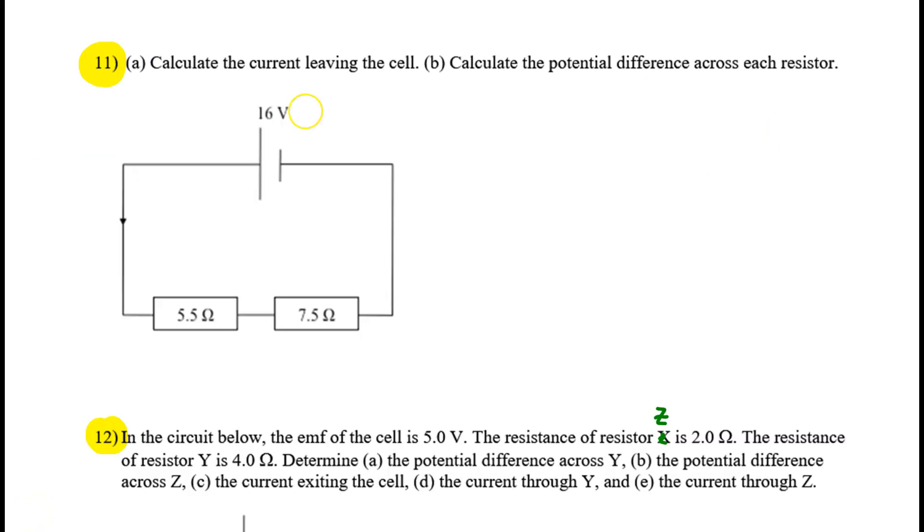On to number 11. We're given the EMF. We know the resistances. I'll call this R1 and R2. First we have to find the current leaving the cell. That represents the total current in the entire circuit. Because when it leaves the cell, that's the very beginning. From there, it could split across different paths. But when it joins back up at the cell, it has to all be together again. So it's the total.